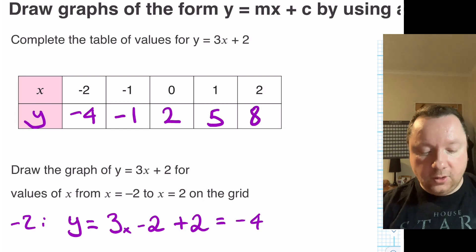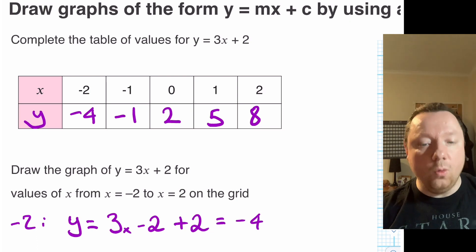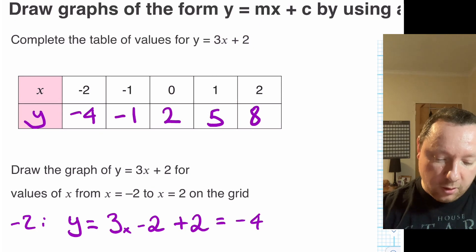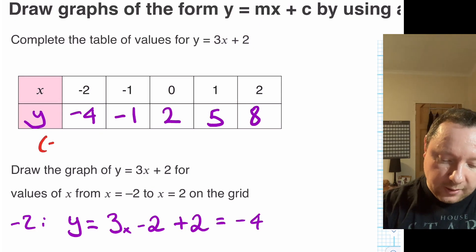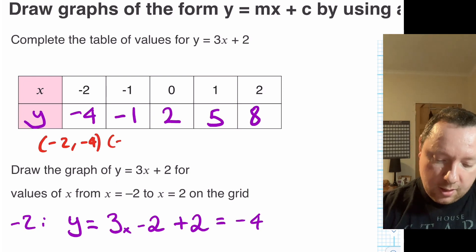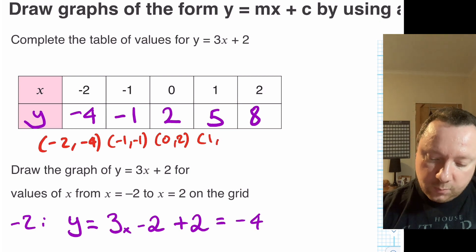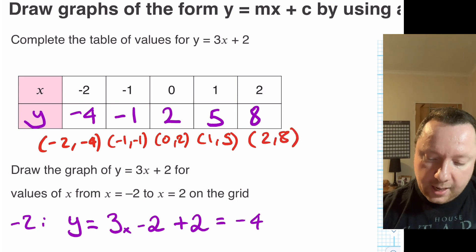So I end up with a bunch of numbers with an x and a y. Remember, an x and a y is just a coordinate, so I can turn these numbers into coordinates by taking the top number and the bottom number. So I've got (-2, -4), then (-1, -1), then (0, 2), then (1, 5), and then the last one (2, 8).